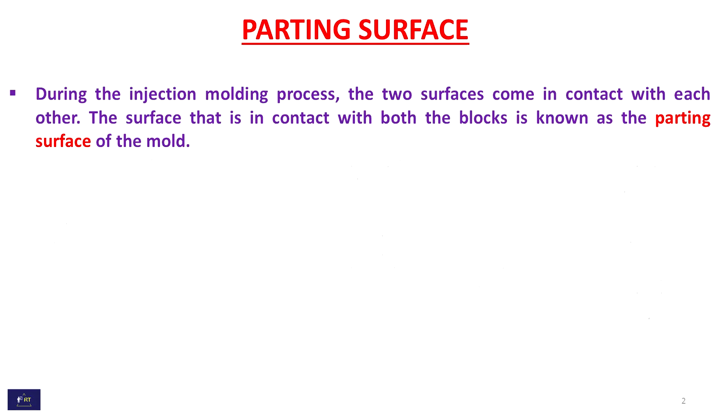During the injection molding process, the two surfaces come in contact with each other. The surface that is in contact with both the blocks is known as the parting surface of the mold.